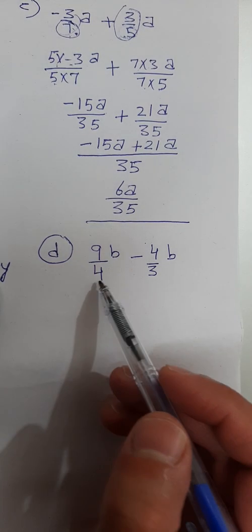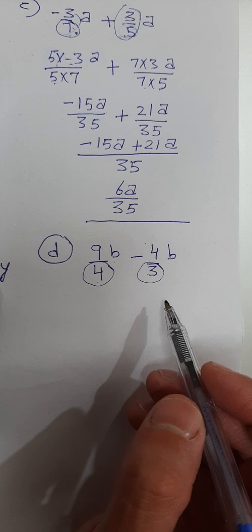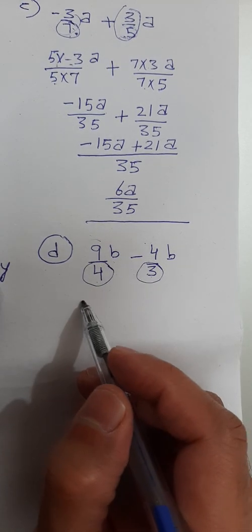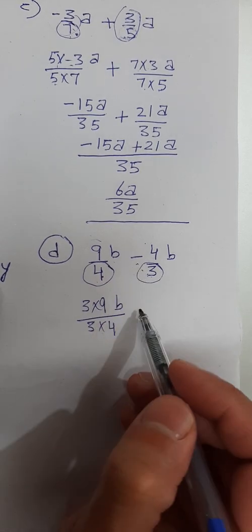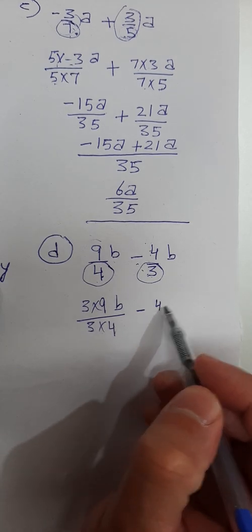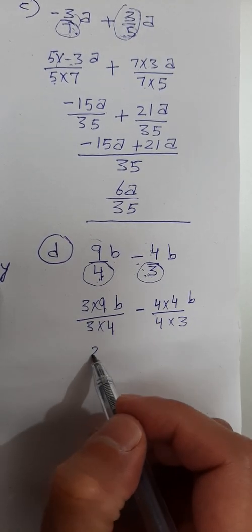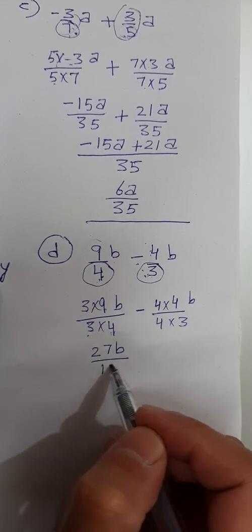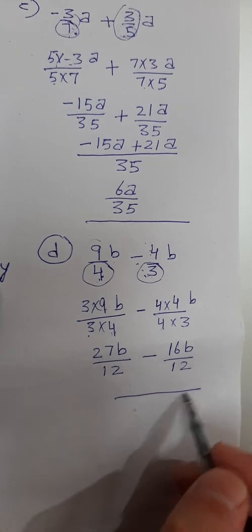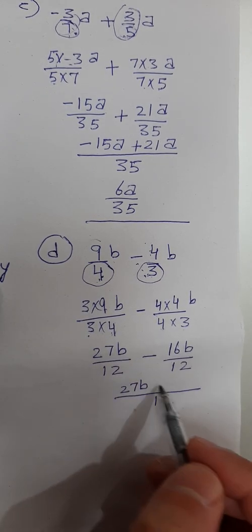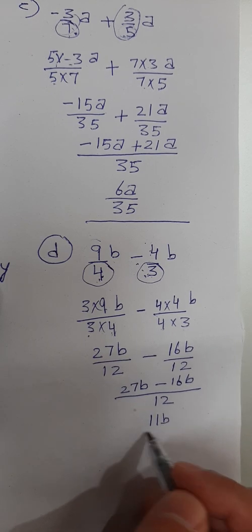Question 9, part d is 9 over 4b minus 4 over 3b. Multiply denominator 3 by the first fraction: 3 into 9b over 3 into 4, giving 27b over 12. Minus, multiply denominator 4 by the second fraction: 4 into 4b over 4 into 3, giving 16b over 12. The LCM is 12, so 27b minus 16b is 11b over 12.